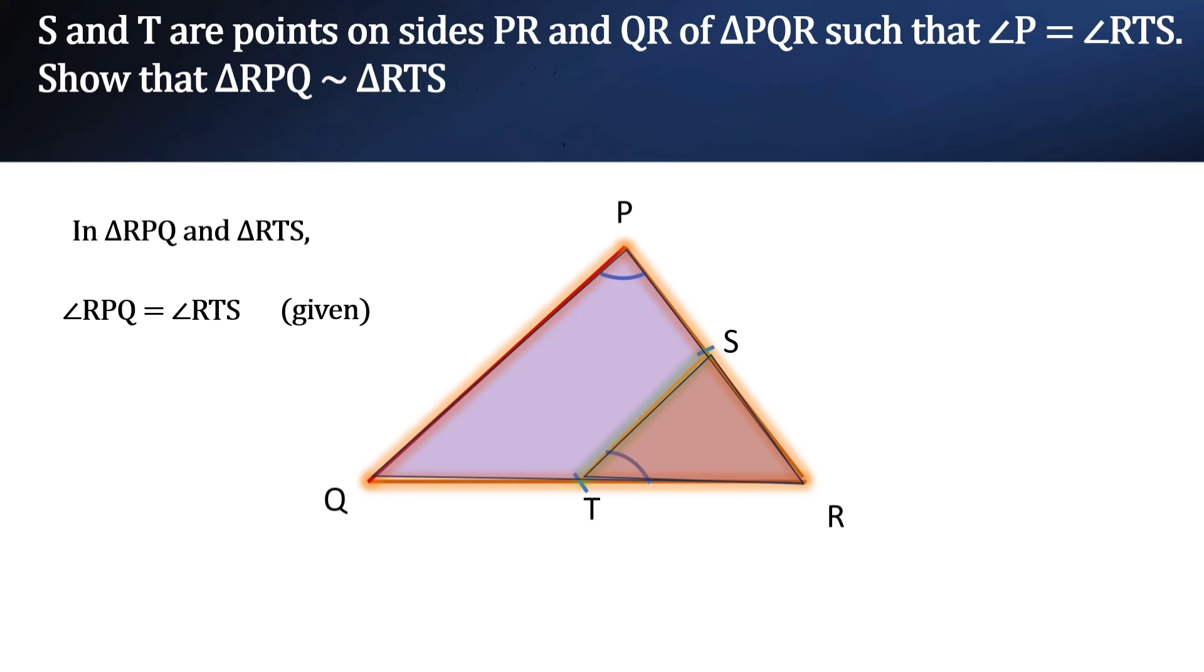And angle R, that is angle PRQ, is equal to angle TRS. We can observe that the angle is common to both. So triangle RPQ is similar to triangle RTS by AA similarity criteria.